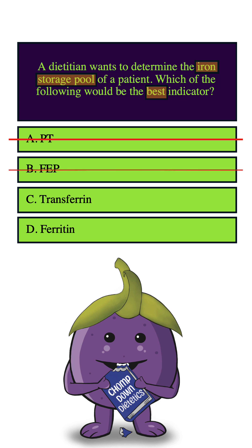How about C, transferrin? Transferrin transports iron into the bone marrow for production of hemoglobin and can be determined from total iron binding capacity, which tells you how much unbound transferrin is available to bind iron. So even though it's related to iron, it's not really the best indicator of the iron storage pool. So we can eliminate this answer also.